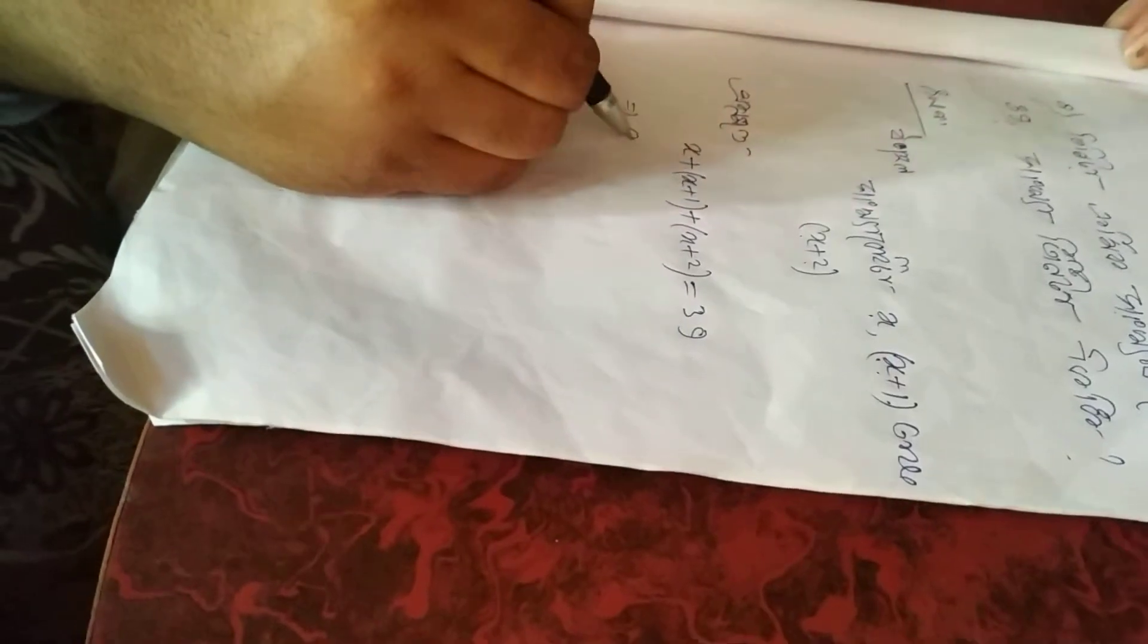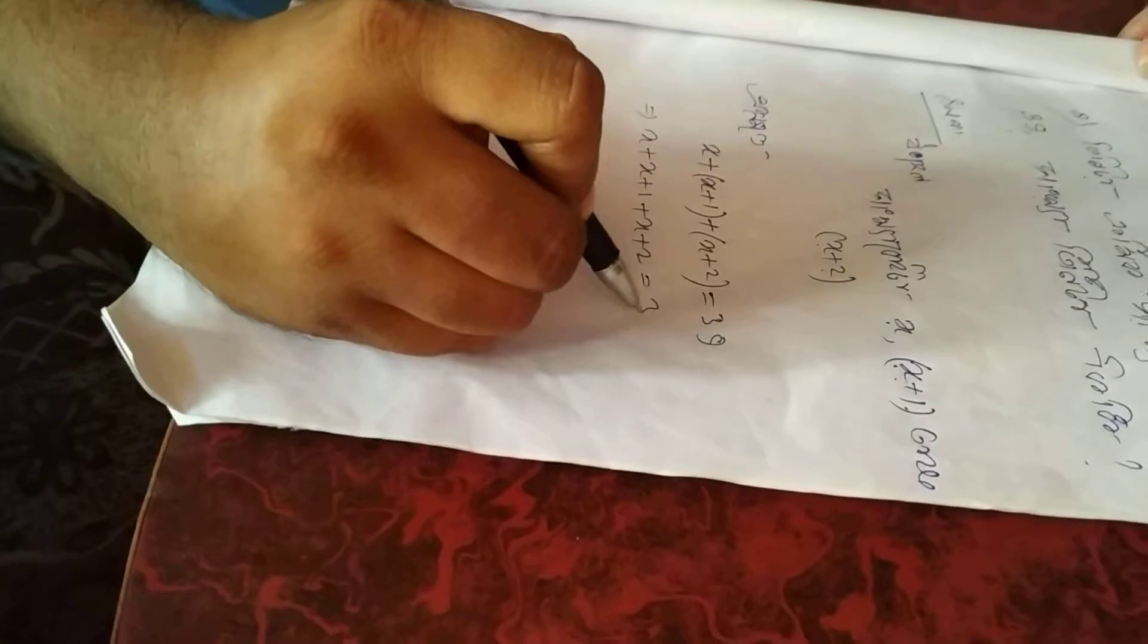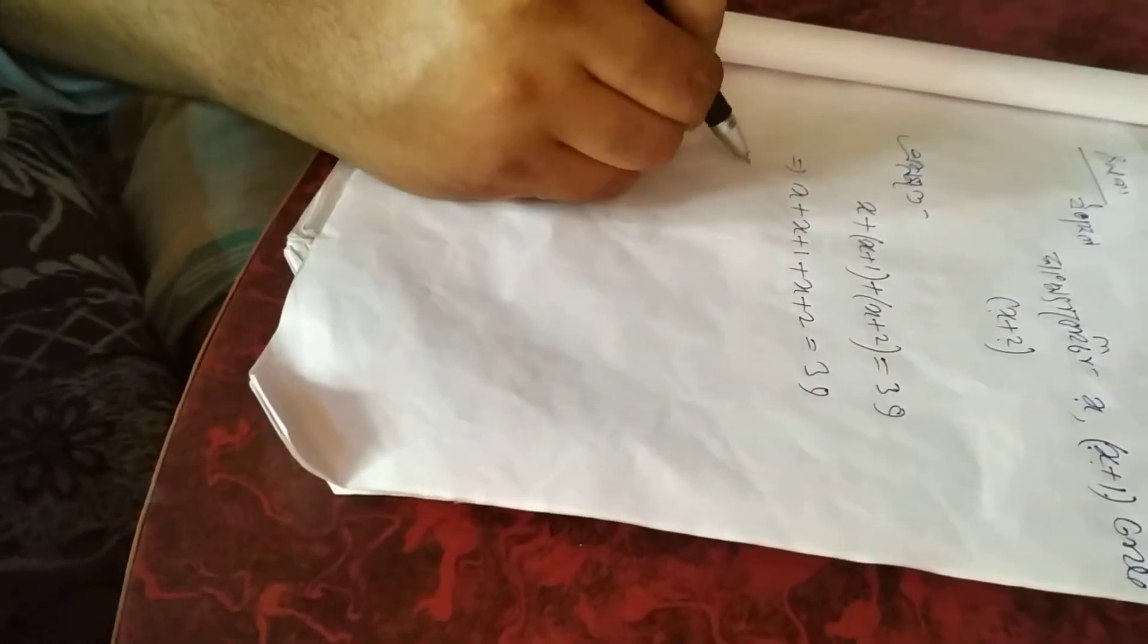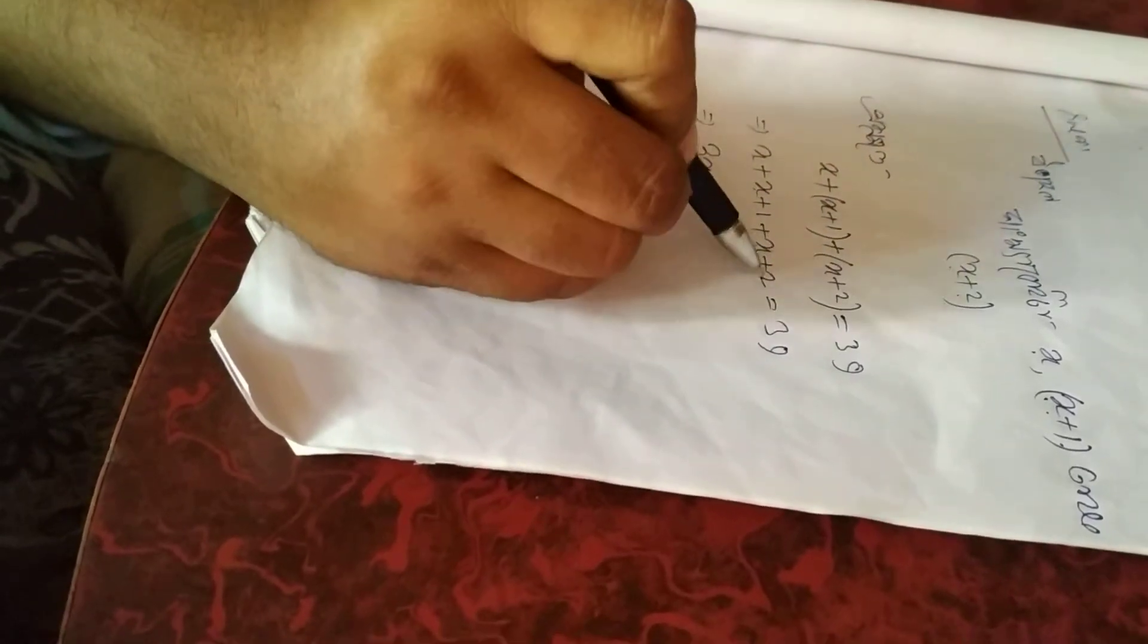Eta ha e to x, E braket bu puli di ni, plus 1 plus x plus 2 equal to 39. Eta ha x 1 2 3 Guiti ki tati 1 2 3 equal to 39.